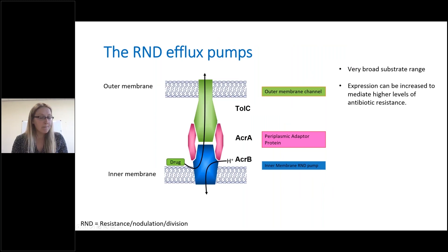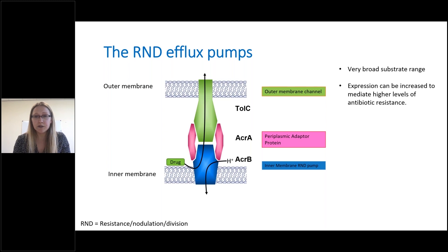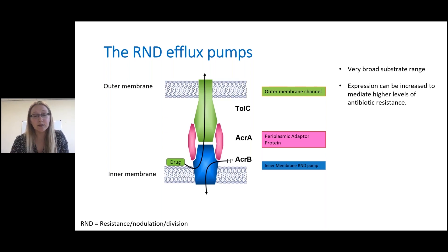Of those molecules that can get in across that double membrane structure, many are then pumped straight back out by the multitude of efflux pumps that gram-negative bacteria have in their membranes. Efflux pumps are molecular machines that sit in the membrane of bacterial cells and pump substrates from inside cells to outside cells — and one of the things they can pump is antibiotics. The family perhaps most important for what we're talking about today is the RND, or resistance nodulation division family of efflux pumps, because they're able to pump drugs of many different structural classes.